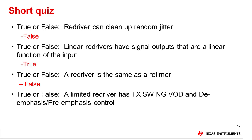True or false: A limiting re-driver has TX swing VOD and de-emphasis or pre-emphasis control. The answer is true. These additional features make the signal output nonlinear in relation to the input signal.